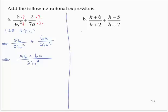Exercise B. h plus 6 over h plus 2 plus h minus 5 over h plus 2.